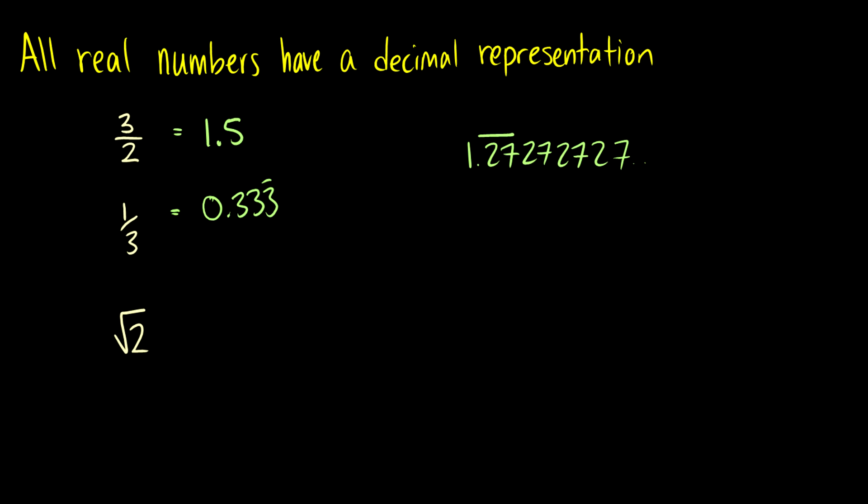But what about this root 2 here? So root 2 is an irrational number, but it still has a decimal representation. And that's going to be 1.142, and then it goes on forever in a random pattern that we don't know.